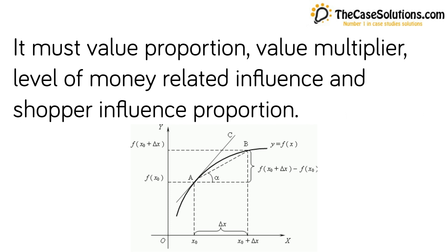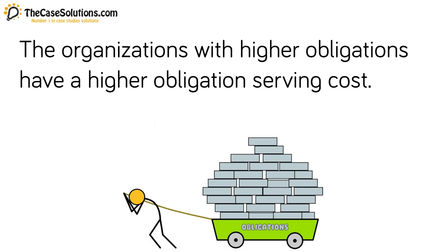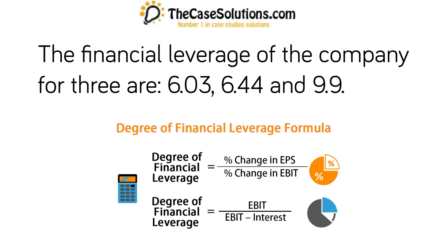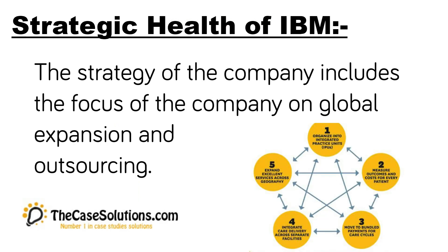If the multiplier is higher, it implies that the debt component of assets is expanding, which will be a progressively significant financial influence for the organization. Organizations with higher debt have higher debt-servicing costs, meaning they must generate more revenues. The financial leverage figures for three years are 6.03, 6.44, and 9.9. The ROE of IBM is 0.82, 0.87, and 2.03 in 2012, 2013, and 2014 respectively, and competitors are also near to these ratios.